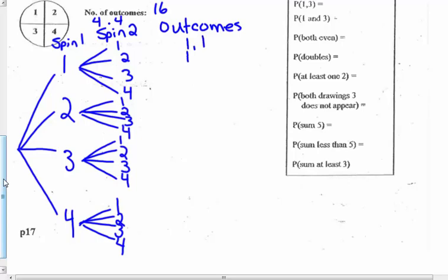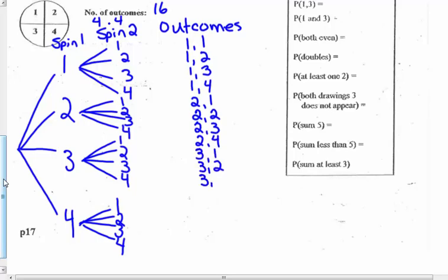Listing all 16 outcomes — four times four using the counting principle: one-one, one-two, one-three, one-four; two-one, two-two, two-three, two-four; three-one, three-two, three-three, three-four; four-one, four-two, four-three, and four-four. There are 16 possibilities.